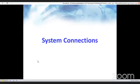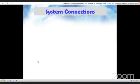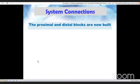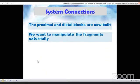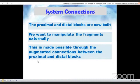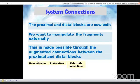Now we come to the system connections. The proximal and distal blocks are now built, and now we want to manipulate the fragments externally. This is possible through the augmented connections between the proximal and distal blocks. So we can do compression, distraction, deformity corrections in the form of translation, rotation, and angulation.